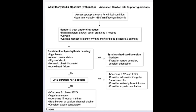I will talk about the adult tachycardia algorithm with ACLS — advanced cardiac life support — guidelines. Assess appropriateness for clinical condition; heart rate is typically more than 150 per minute in tachyarrhythmia. Identify and treat the underlying cause. For example, maintain patent airway, assist breathing if needed, apply oxygen, and use a cardiac monitor.